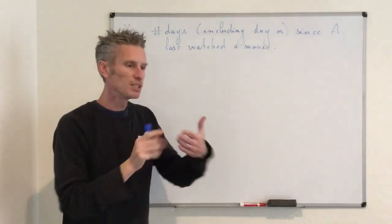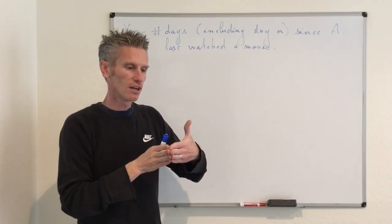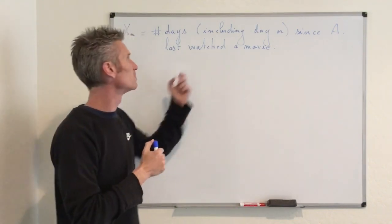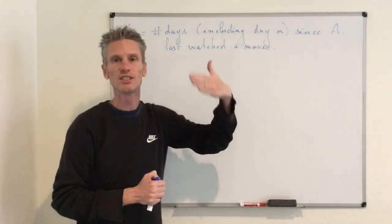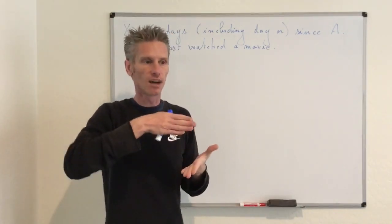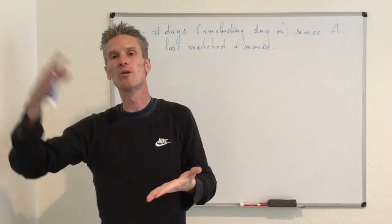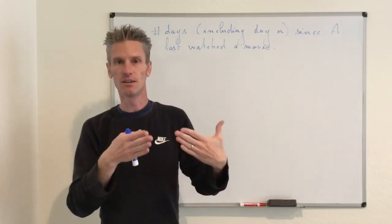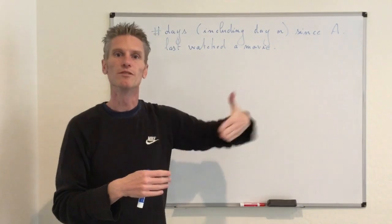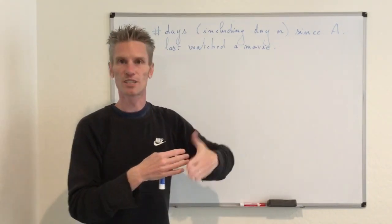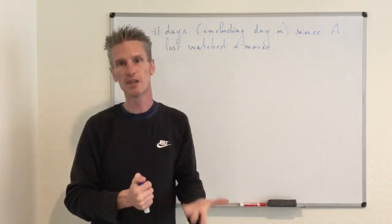Basically what we are doing is keeping track of the last time she watched a movie. Each time she goes to watch a movie again, the Markov chain is back to state zero. State zero is in the state space because if she watches a movie on day n, the last time she watched a movie — including day n — is day n itself, so the number of days since she last saw a movie is zero. The process can also increase: if she spends some time without going to the movies, the process goes from zero to one, one to two, and so on. Each time she watches a movie again, we are back to state zero.